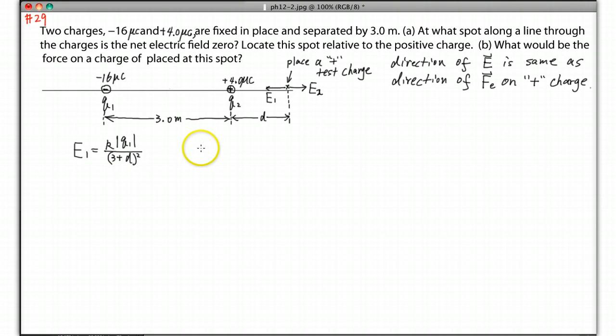And then E2 should equal K|Q2| over the distance, which is just D squared. And if we make these two magnitudes equal, we already figured out the direction is opposite. So as long as their magnitude is equal, then we can just find out D.